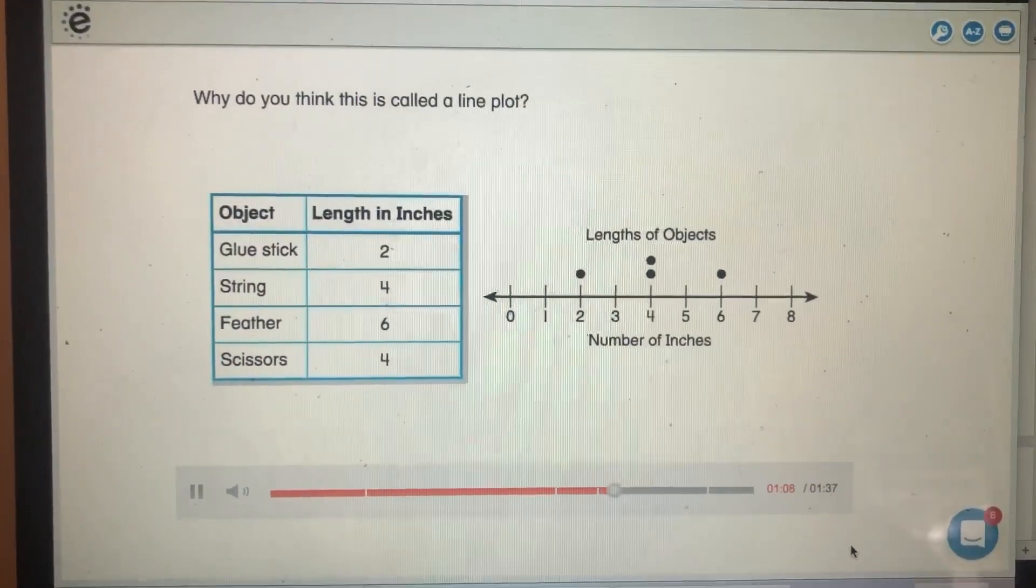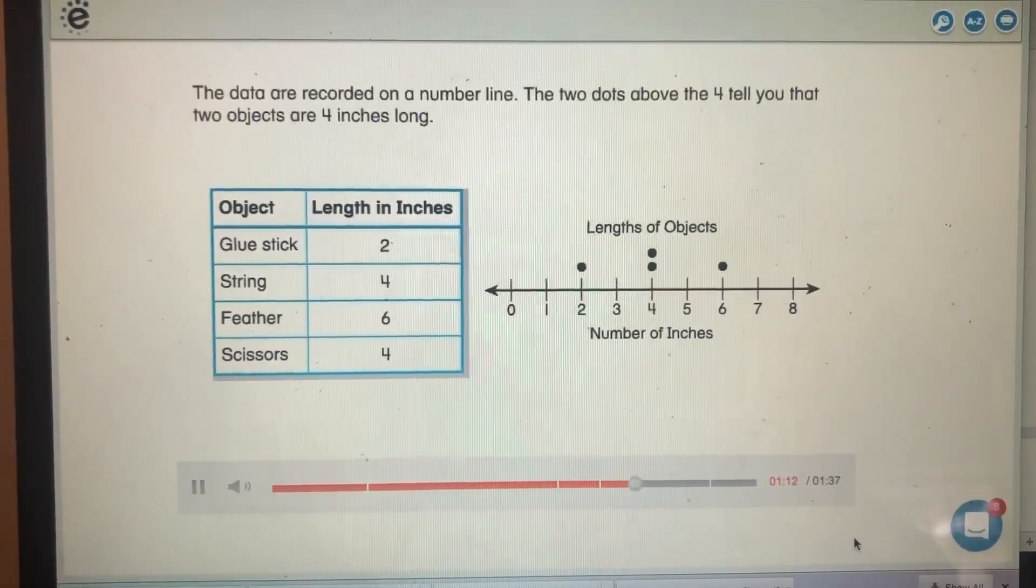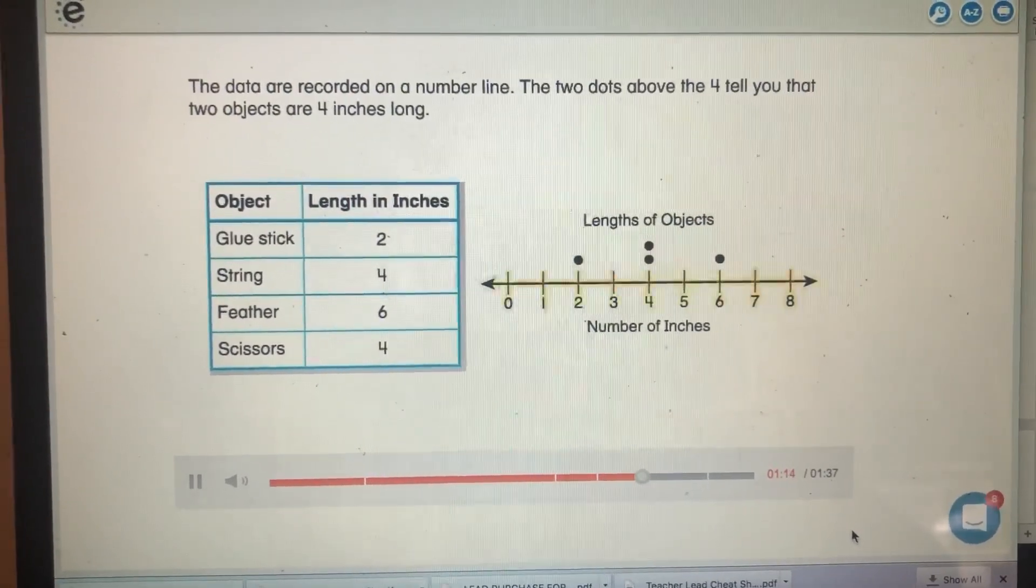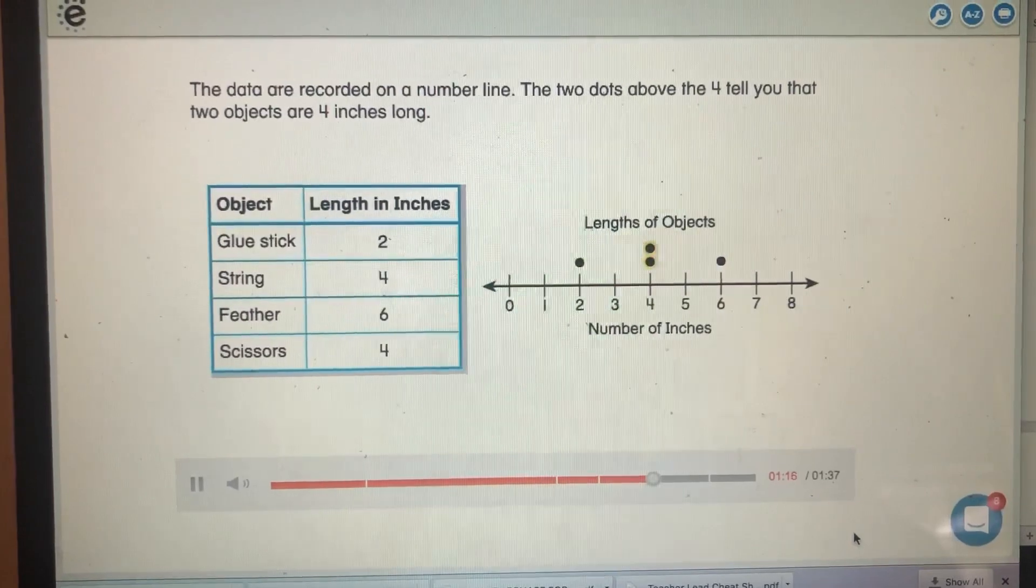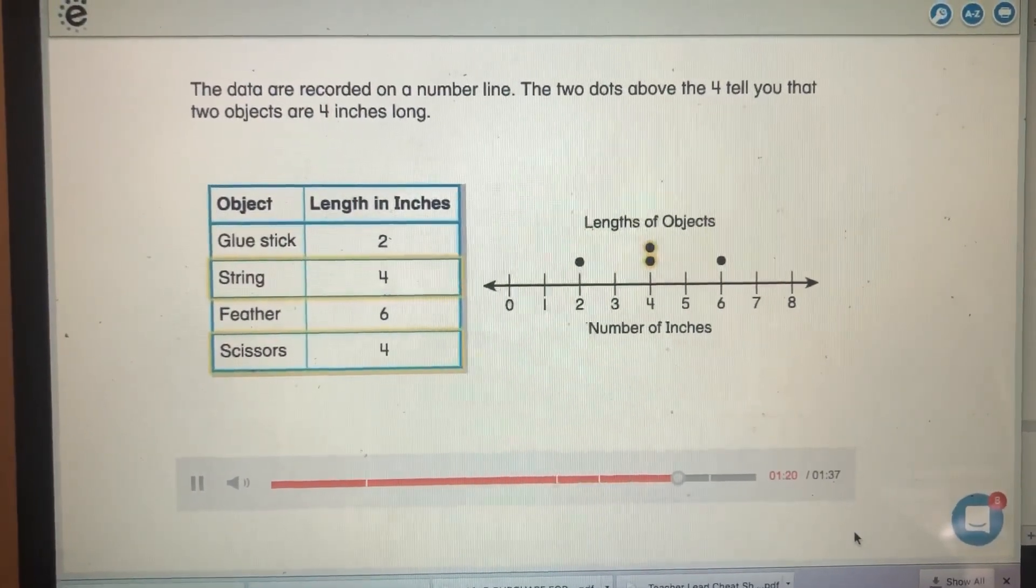Why do you think this is called a line plot? The data are recorded on a number line. The two dots above the four tell you that two objects are four inches long.